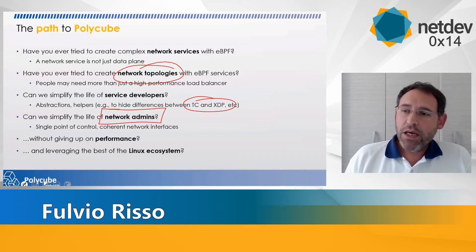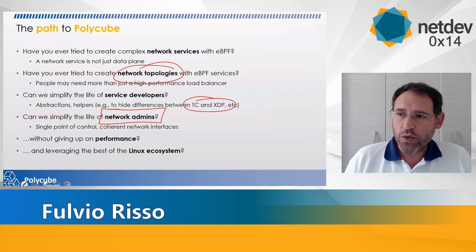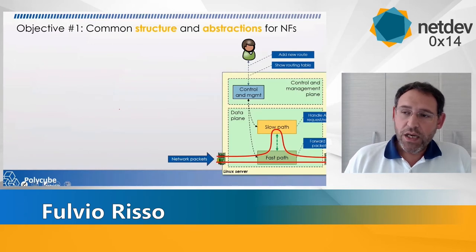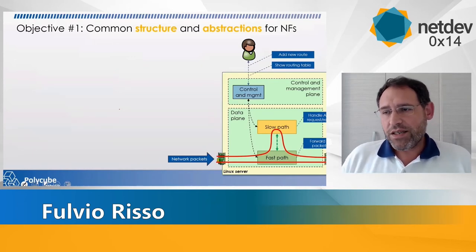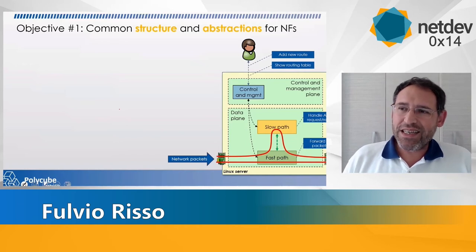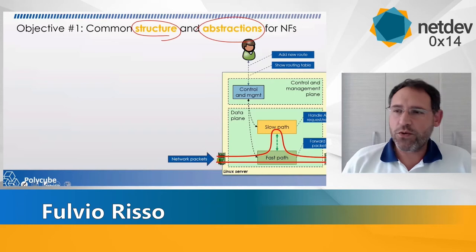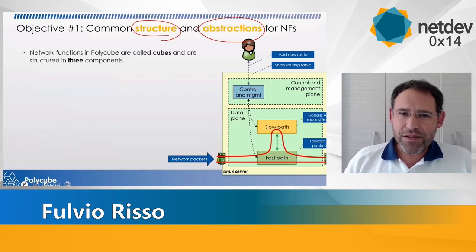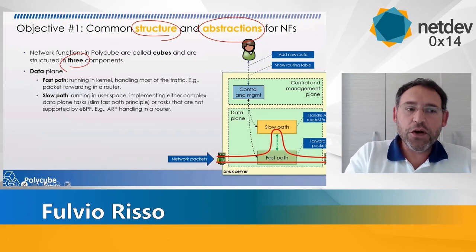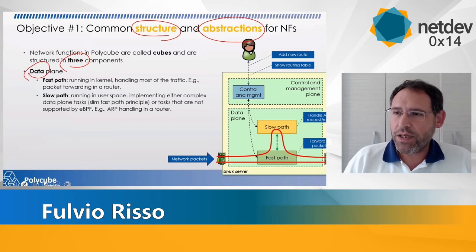Those are basically the detailed questions we tried to answer when we created Polycube about three years ago. Let's see how this software framework works, splitting this presentation into six different objectives. The first objective is to create a common structure and abstraction for network functions, which means that network functions are usually made of three components. The first is the data plane, which is in charge of forwarding packets. All network devices have two kinds of data plane processing.